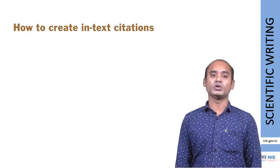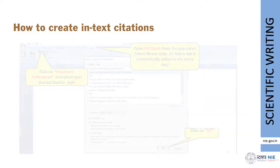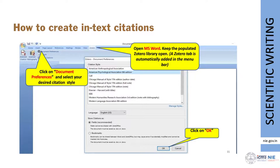The first thing is to select your citation style. To do that, click Document Preferences after clicking the Zotero tab. A box will appear with many citation styles. Select which citation style you want — maybe Vancouver, American Psychological Association, IEEE, or Nature. Select any citation style for your research purpose, then click OK. Your document citation style will be stored.